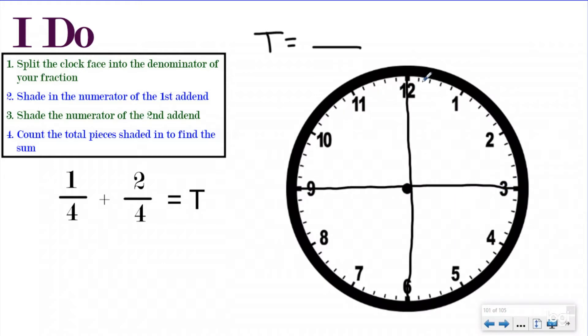So now I have four equal groups. And I'm going to shade in one-fourth because that's my first addend. I'm starting with one-fourth, and then I'm going to add two-fourths to it. Now I need to shade the numerator of my second addend. I need to shade two-fourths more. So I'm going to shade in two more equal groups.